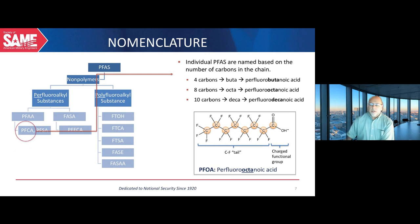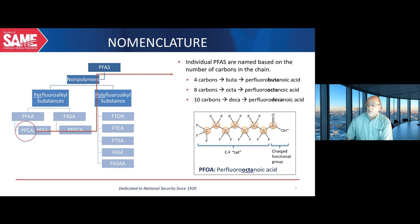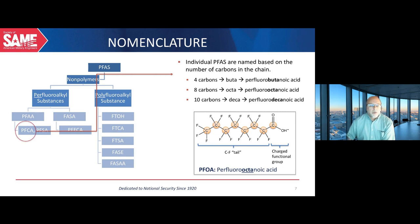Individual PFAS are named based on the number of carbons in the chain. For example, four carbons is 'buta,' so perfluorobutanoic acid has four carbons; eight carbons equals 'octa,' so perfluorooctanoic acid has eight carbons, also called PFOA. In the diagram of PFOA we see the eight-carbon chain, an important feature being a head — a charged functional group — and a tail, which is the fully fluorinated group. This head-and-tail structure becomes relevant for fate and transport and treatment.